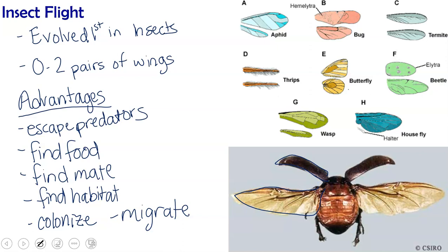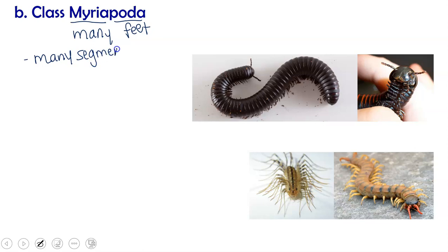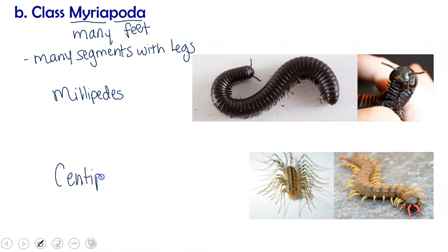Another class is Myriapoda, meaning many feet. These have many segments with legs and include millipedes, which have two pairs of legs per segment, and centipedes, which have one pair per segment. Another difference: millipedes are poisonous — toxic if you eat them — whereas centipedes are venomous, meaning they can inject a toxin into you.